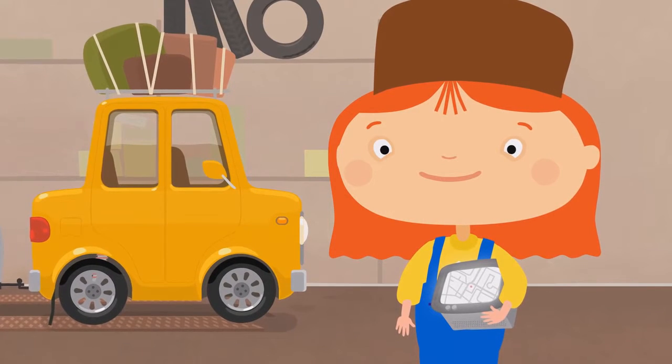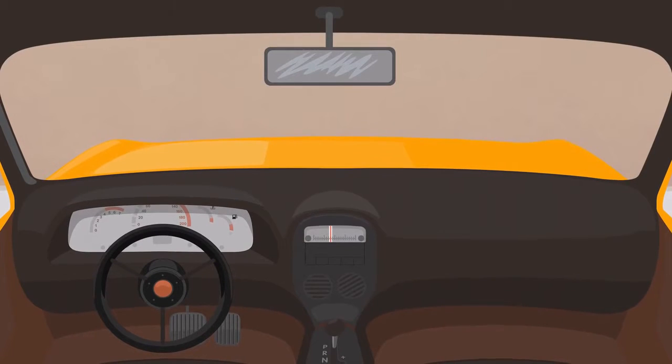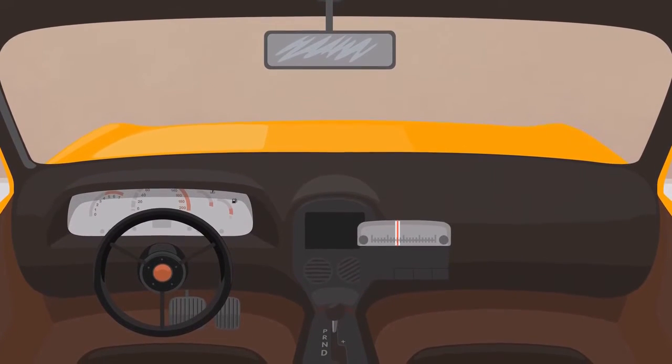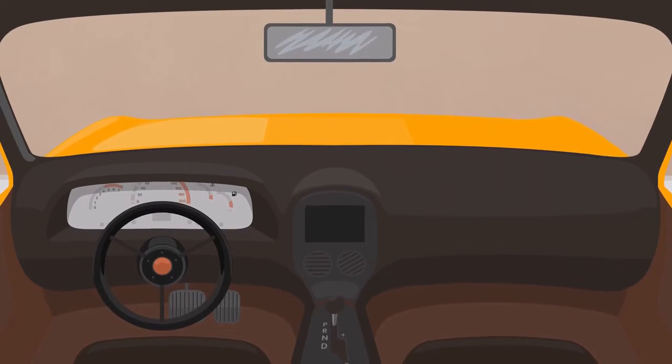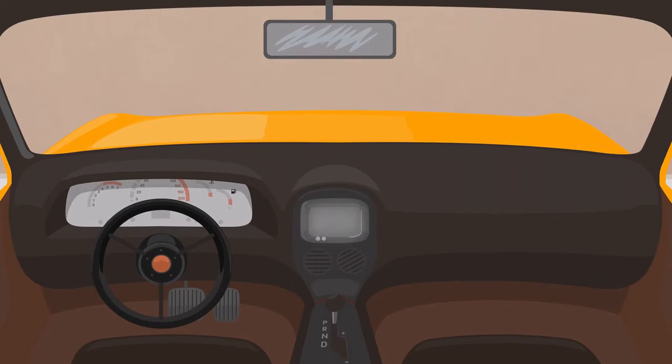Let's turn it on and put it in the yellow car. Now remove the old radio. We no longer need it. And put the GPS in its place. Make sure it's on.